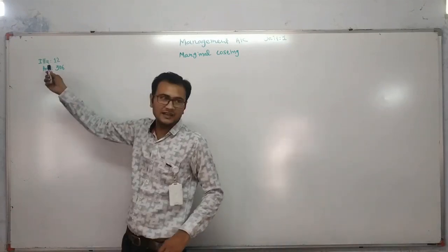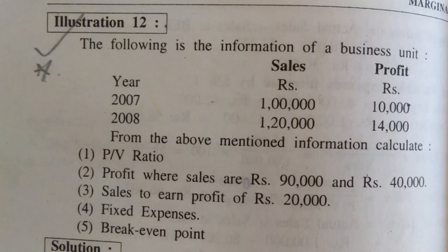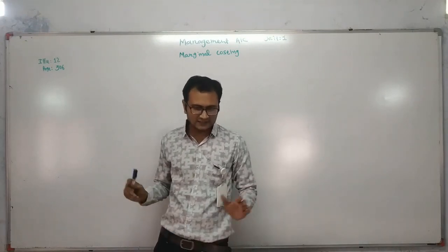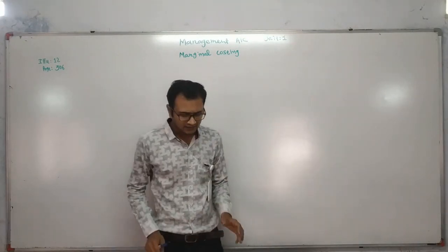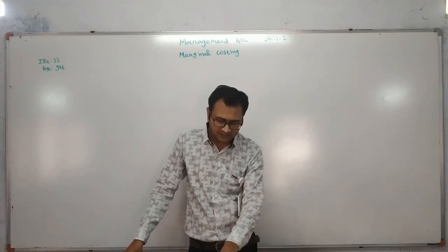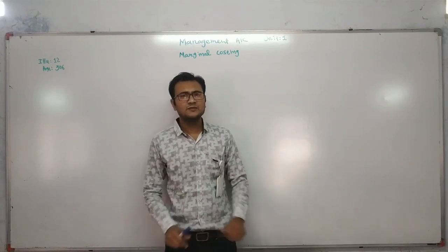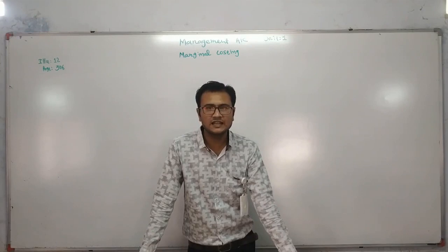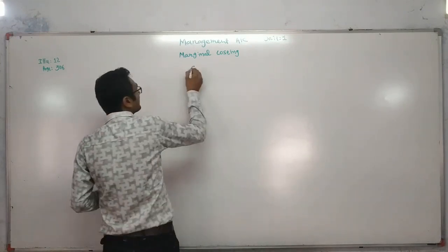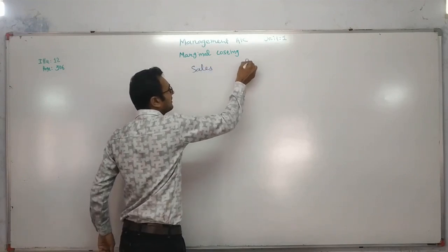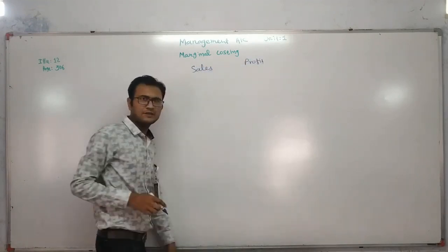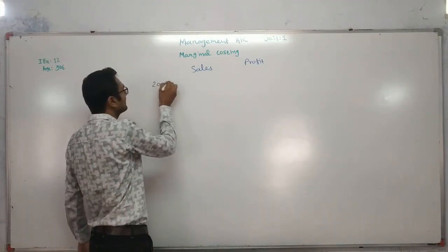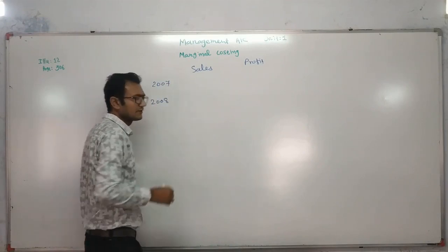We will start with illustration 12, page number 306. The following is the information of a business unit. In this practical problem, the information is given about two years: 2007 and 2008. Information is given about the sales as well as profit for both years.